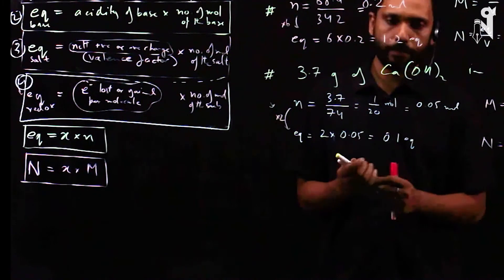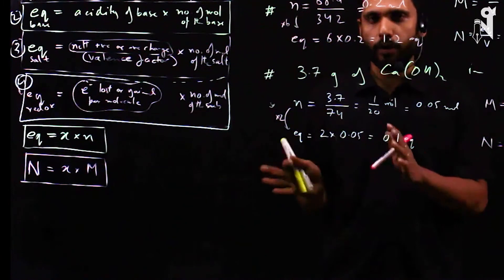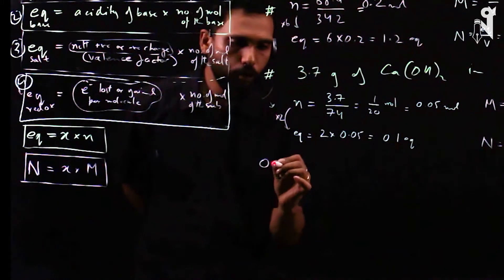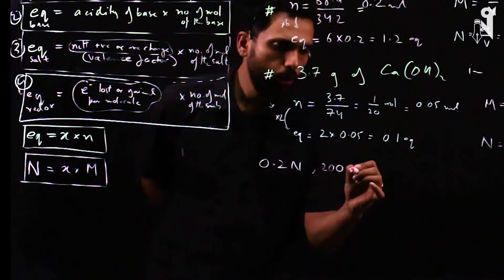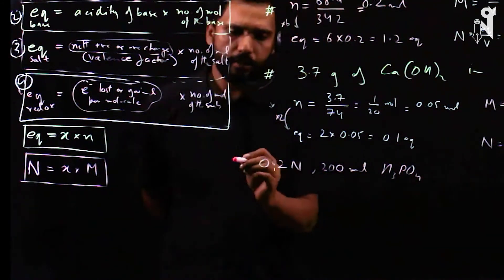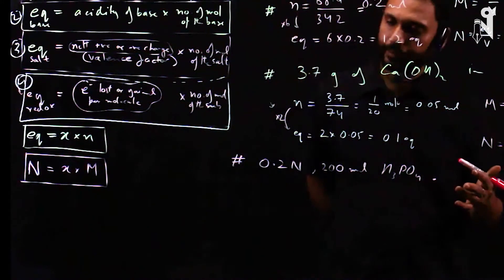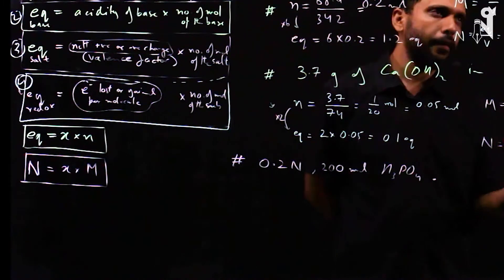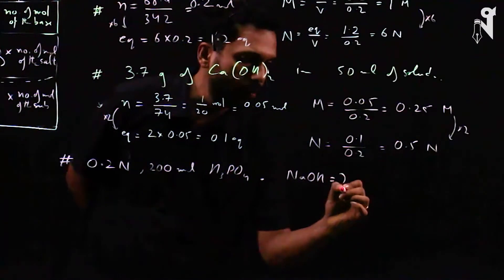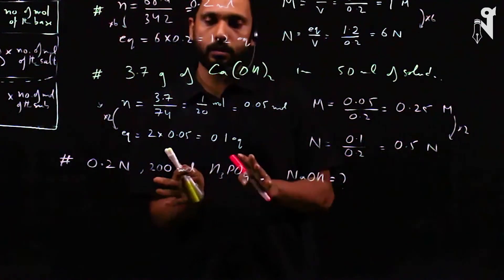Now I'll give a chemical equation question. We have 0.2 normal, 200 ml H₃PO₄ solution. The question is: how many grams of NaOH will this neutralize?